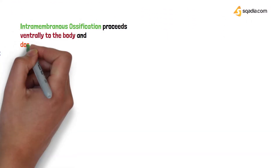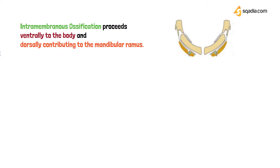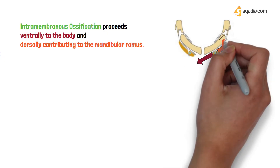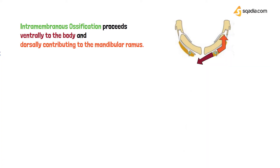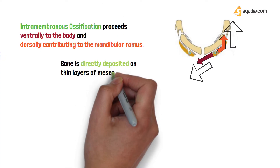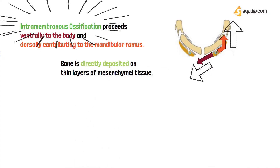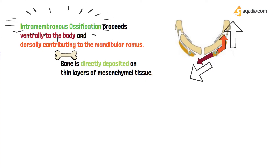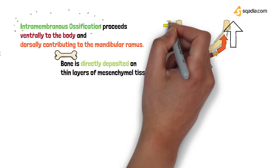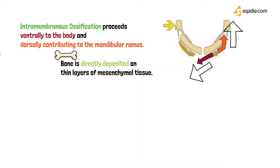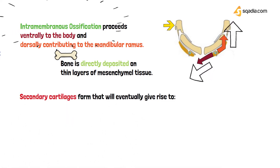Intramembranous ossification takes place, proceeding ventrally to the body and dorsally, contributing to the mandibular ramus. Ossification moves ventrally towards the body and backwards and upwards contributing to the mandibular ramus. Intramembranous ossification occurs when bone is directly deposited on the mesenchymal tissue — here the Meckel's cartilage is the mesenchyme, and bone is directly deposited by the osteoblasts.